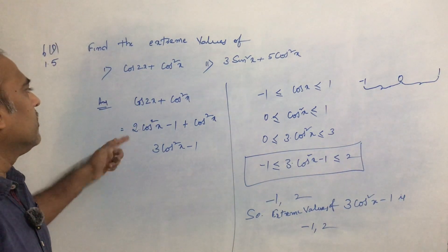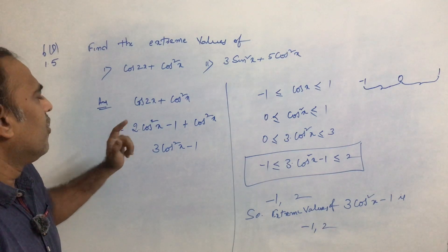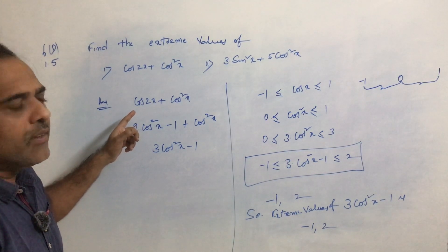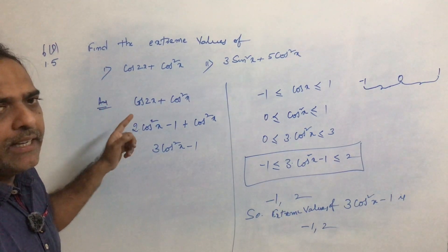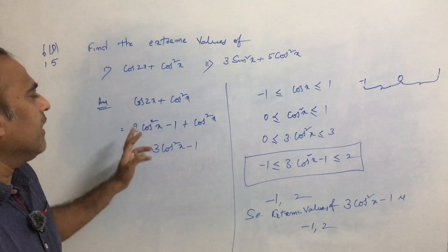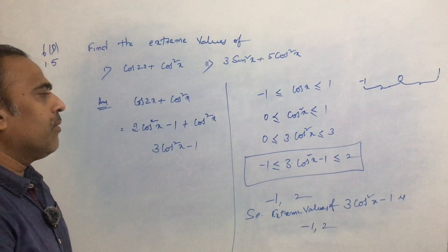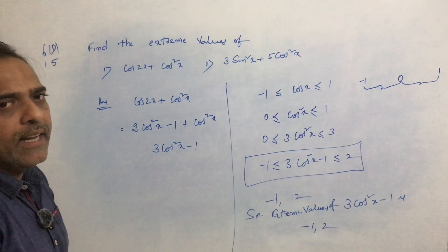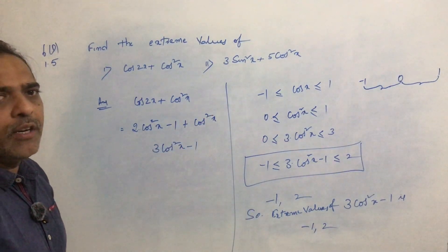The trick here is that we need to convert the given equation into homogeneous form — meaning either cosx, cos²x, cos³x, sinx, sin²x, or sin³x. If we convert the given equation into that form, it will be easy to solve the problem and find the extreme values. This type of problem is worth 2 marks.